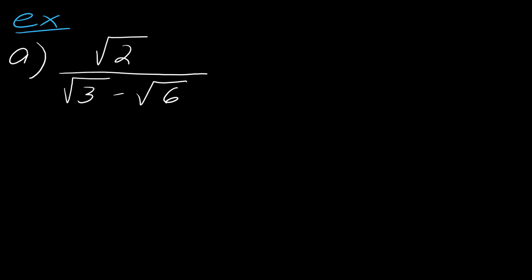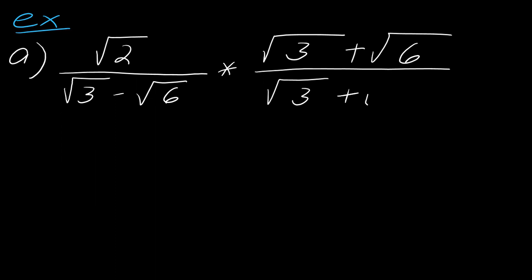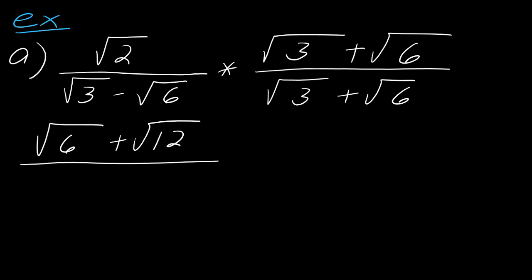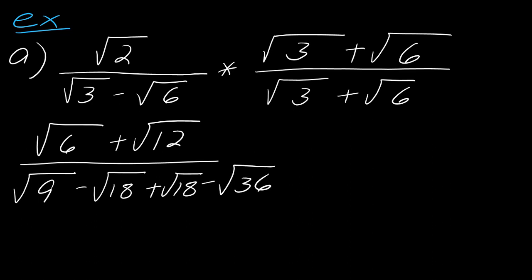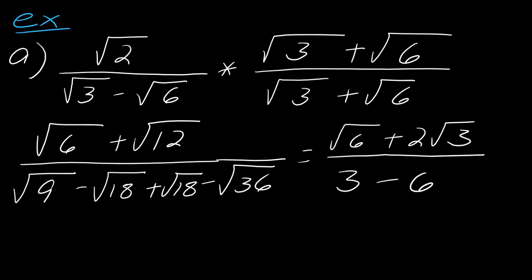Why don't you go ahead and try this one on your own — multiply by the conjugate and hit play when you're ready. So the conjugate in this case is going to be square root of 3 plus the square root of 6. Distributing to the top gives the square root of 6 plus the square root of 12. In the denominator I have square root of 9 minus square root of 18 plus square root of 18 minus square root of 36. The square root of 12 simplifies, so this becomes square root of 6 plus 2 times the square root of 3, and the denominator becomes 3 minus 6, giving a final answer of square root of 6 plus 2 times the square root of 3 over negative 3.